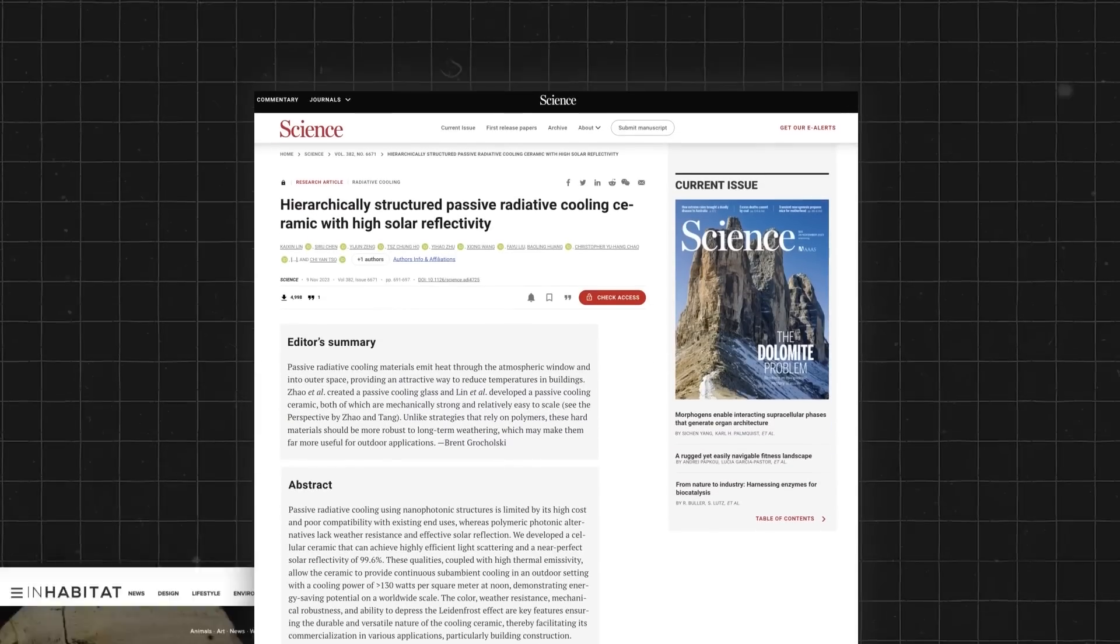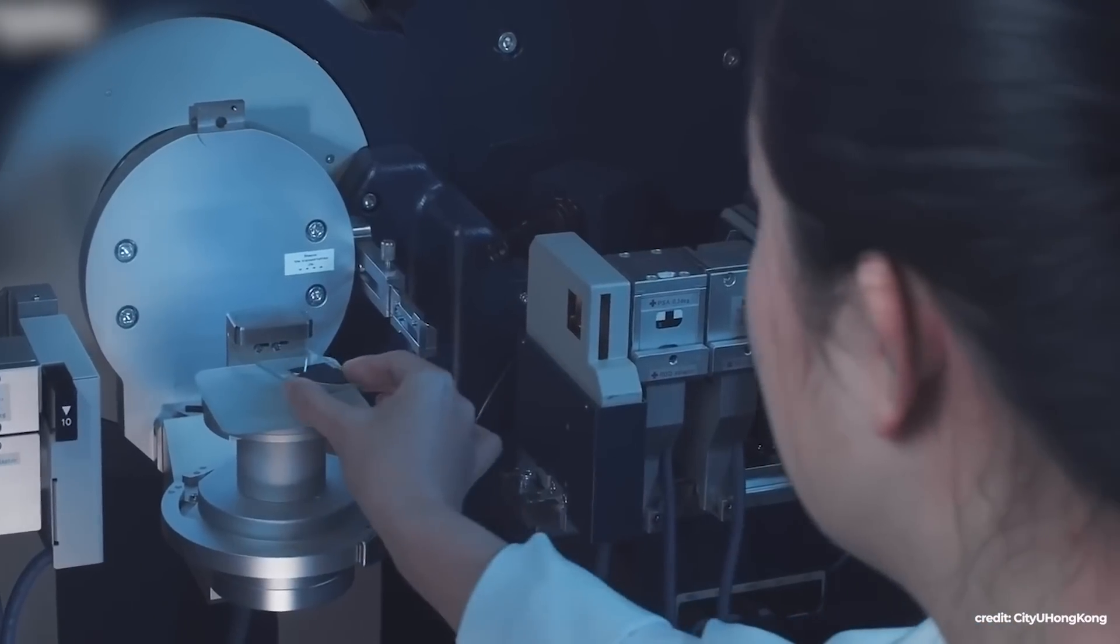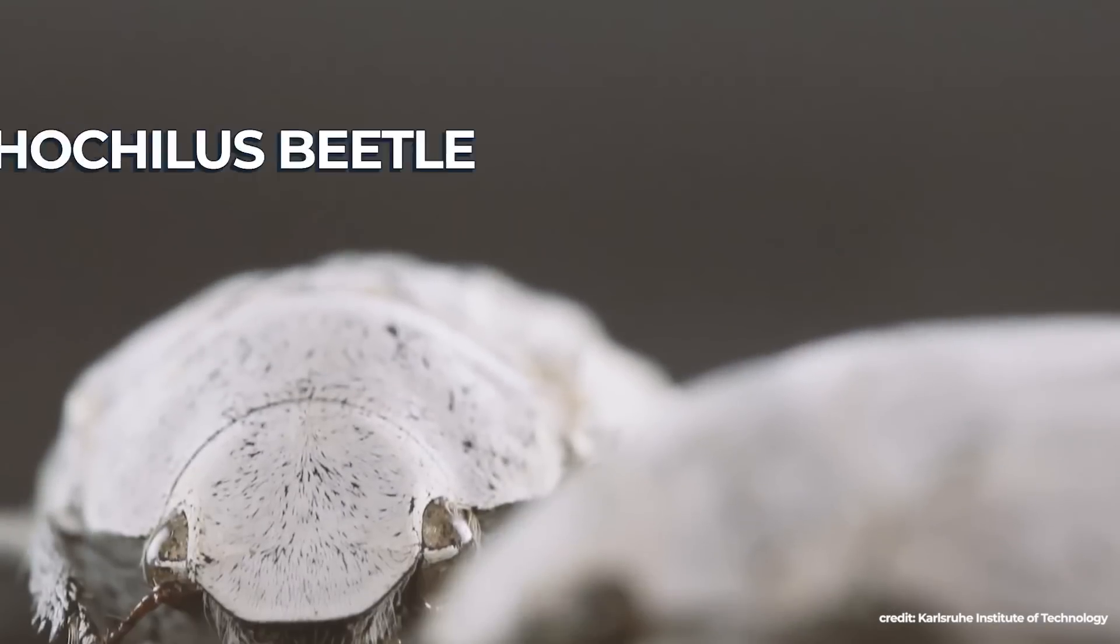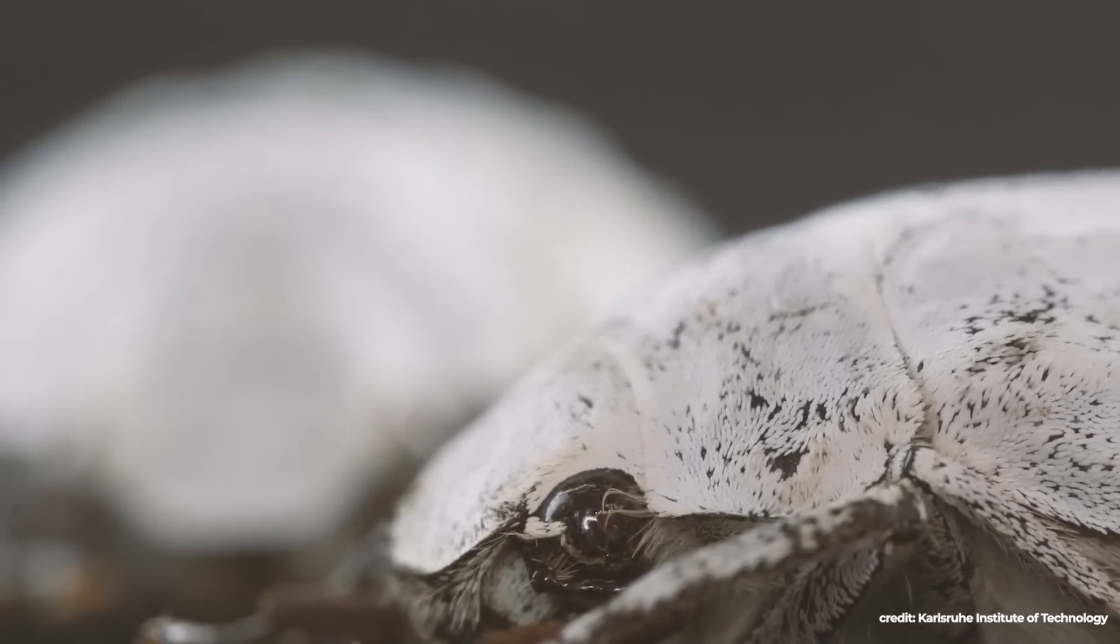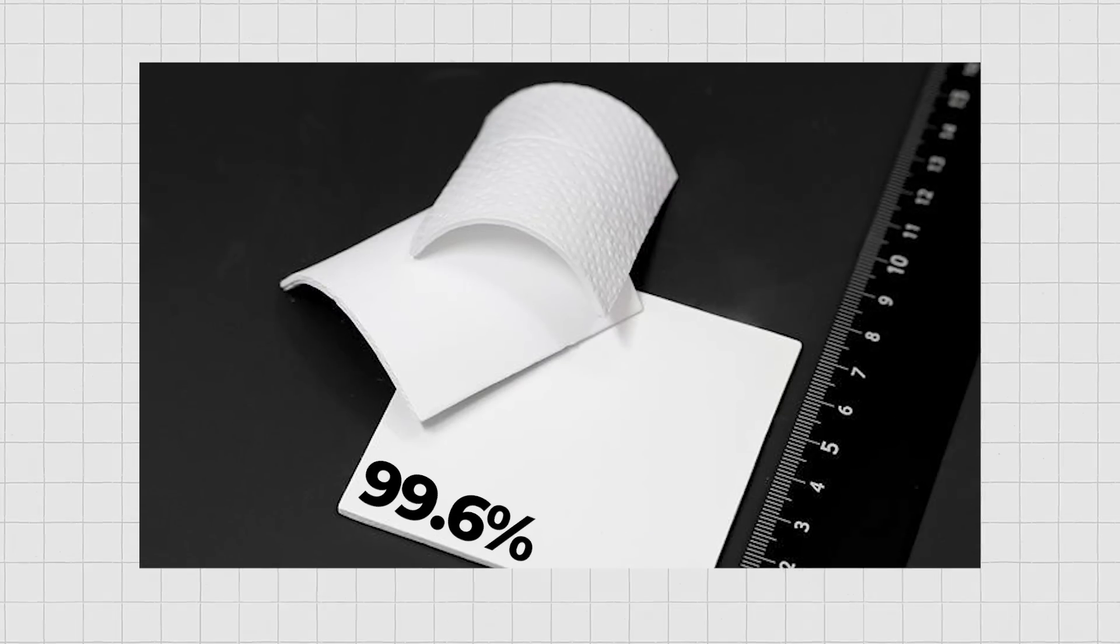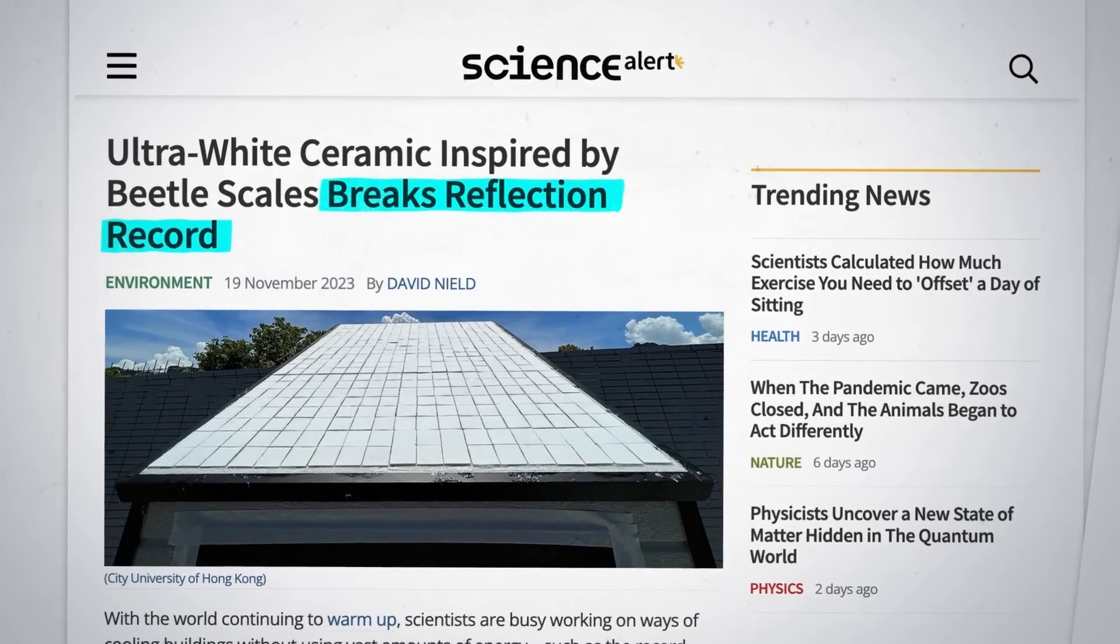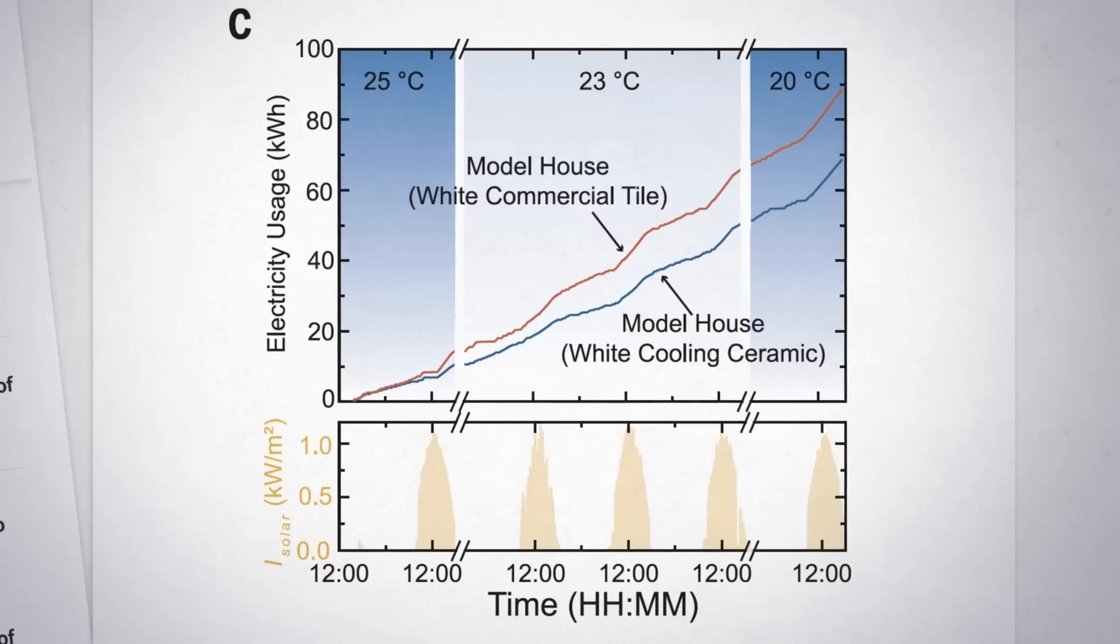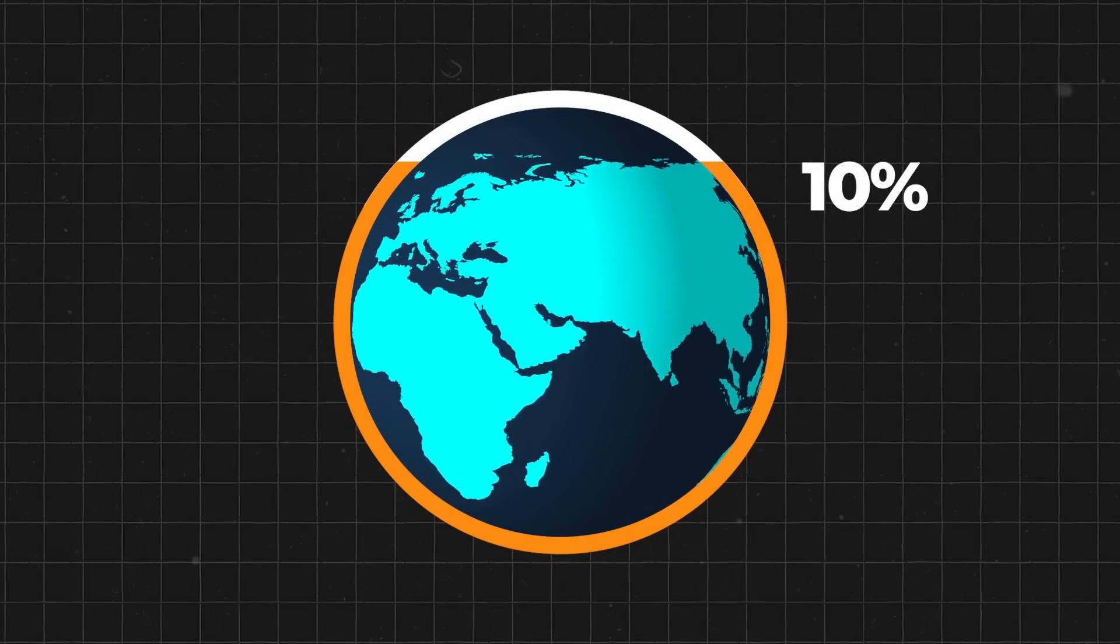In a groundbreaking study published in Science, researchers from the City University of Hong Kong have unveiled an innovative ultra-white ceramic composite inspired by the Sifoculus beetle. It promises to revolutionize the ways buildings are cooled. The material is capable of reflecting up to 99.6% of solar radiation incident on a building, setting a new record for passive radiative cooling materials, and substantially reducing the need for air conditioning, which currently accounts for 10% of all energy used on the planet.